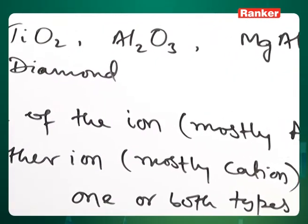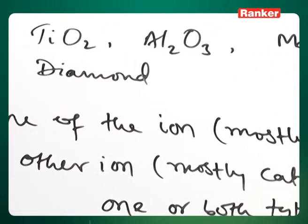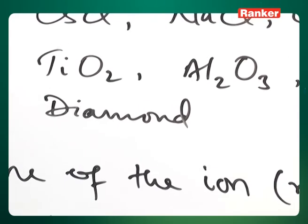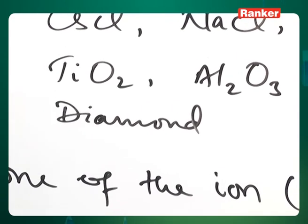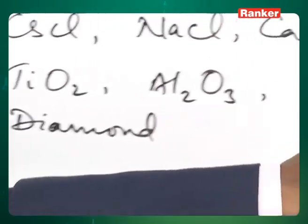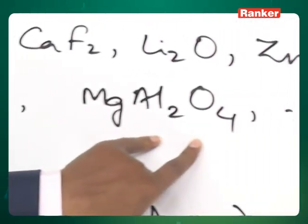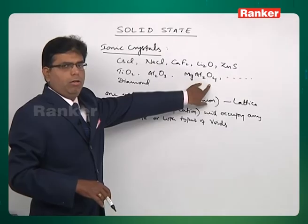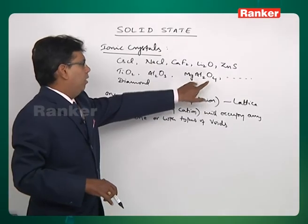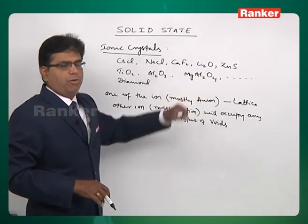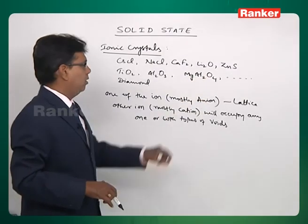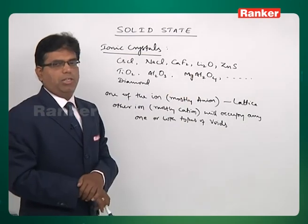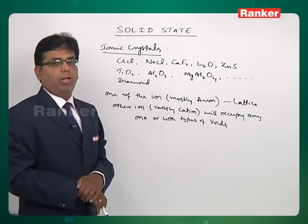One of the ions will form the lattice and the other ion will occupy the voids. In the case of MgAl2O4, if you look at it, oxide ions will form the lattice, and magnesium ions and aluminum ions will occupy the voids.